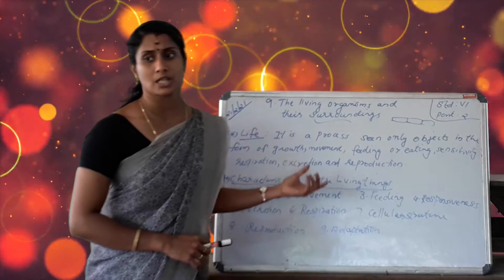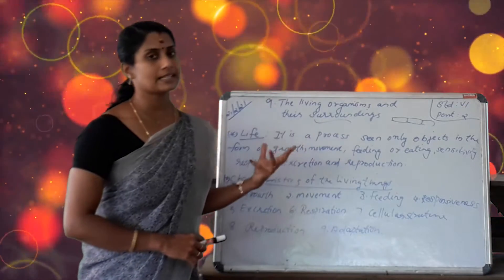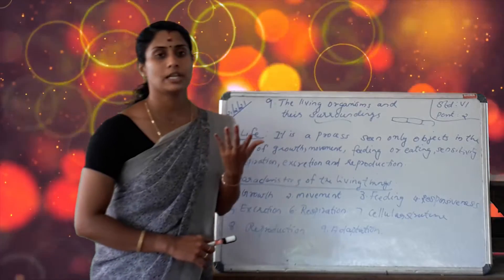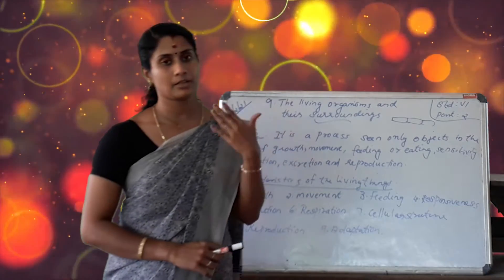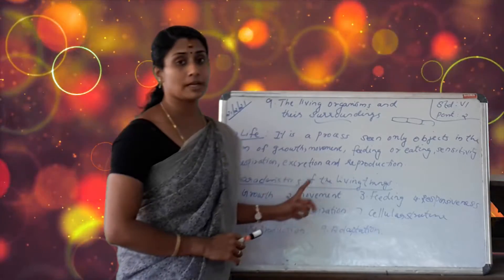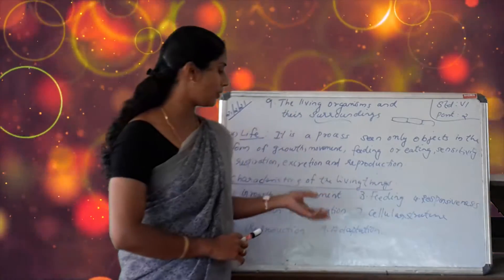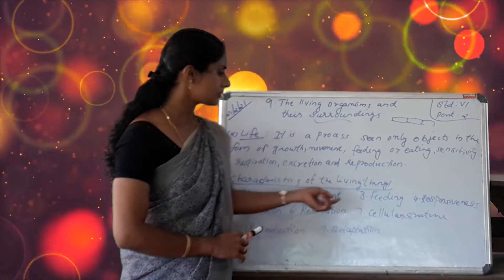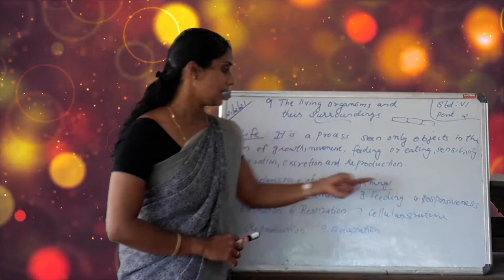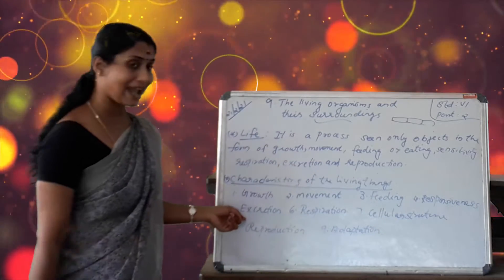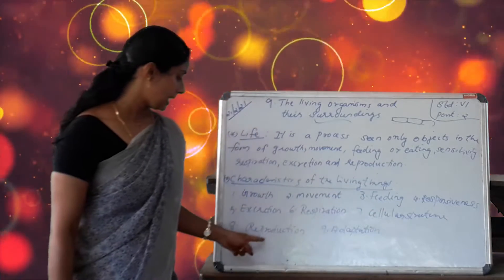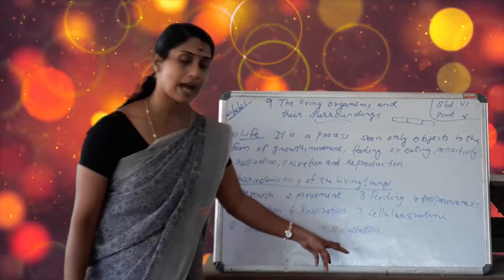What are the characteristics of living things? First is growth — living things can grow. Second is movement — living things move from one place to another. Next is feeding, responsiveness, excretion, respiration, cellular structure, reproduction, and adaptation.